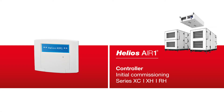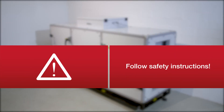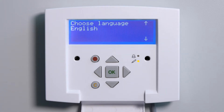In this pro clip for Helios Air One, we will show you the initial commissioning of your ventilation unit with the echo control element. Make sure that all installation work is fully completed before initial commissioning. The control element automatically opens the commissioning assistant during initial commissioning and starts with the language selection.